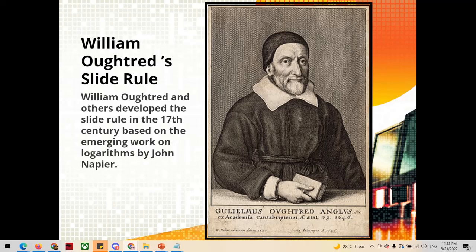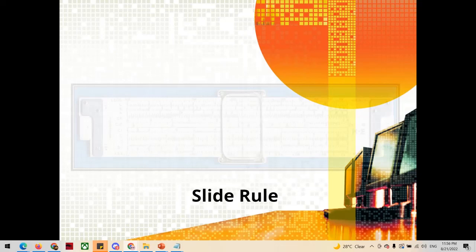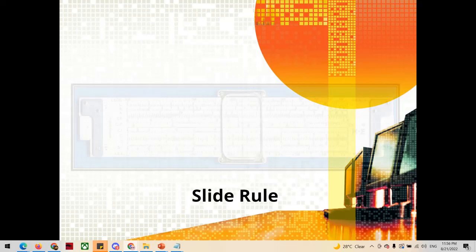William Oughtred, with his companion, created the Heath Slide ruler in the 17th century, using John Napier's work on logarithms as their basis. This is an example image of the slide rule.